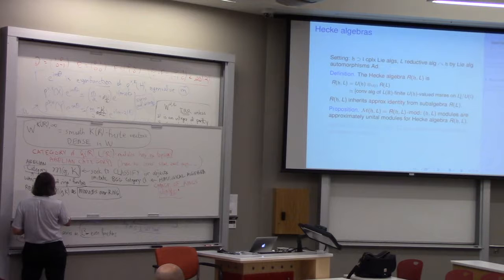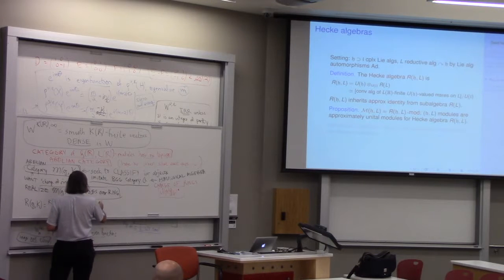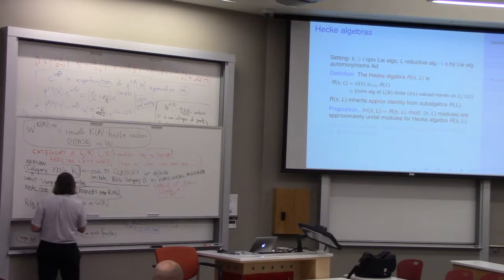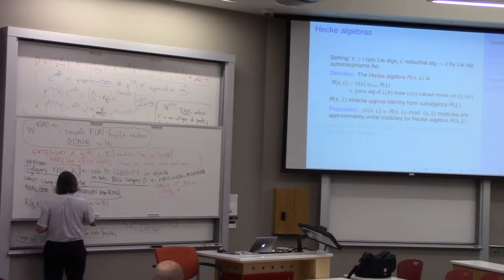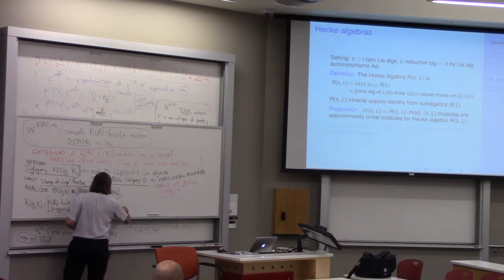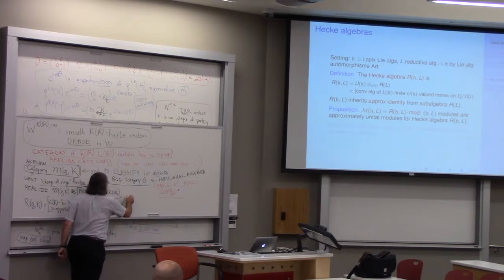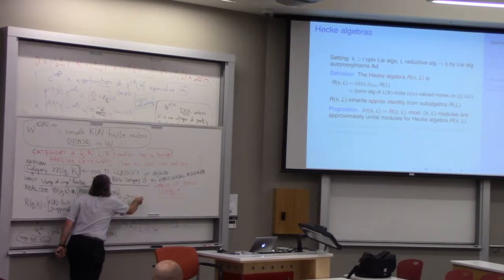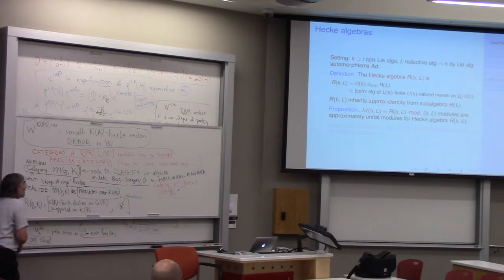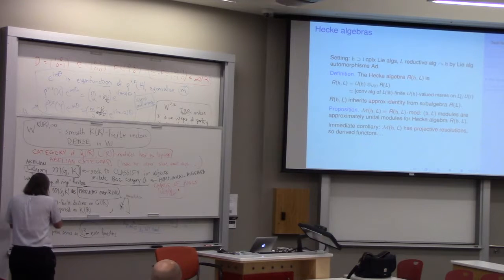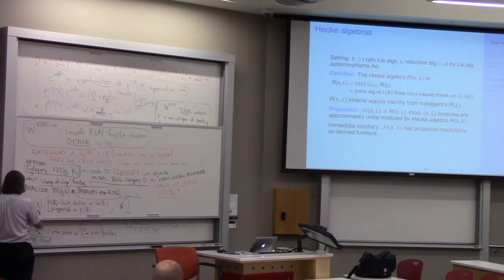These are K-finite distributions on G of R supported on K of R. And the multiplication is convolution of distributions. So this is an approximately unital algebra.